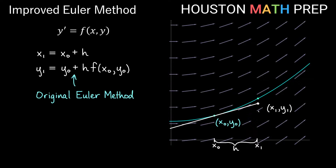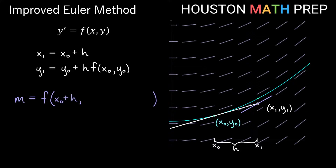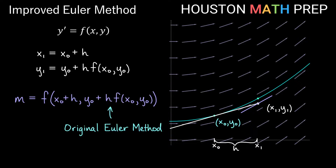If we look at the slope of the slope field over at x1, y1 — the point that Euler's method would have given us — we get a slightly different slope than at x0, y0. Our slope at that point, plugging into the function, we plug in x1 which is x0 plus h. The y value we use is the y value that original Euler's method would have given us. So we have one slope matching the slope field on the left side and another slope matching the slope field on the right side.